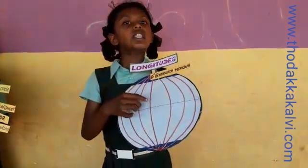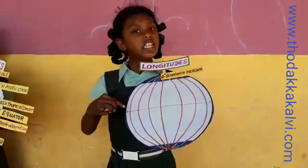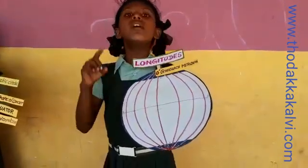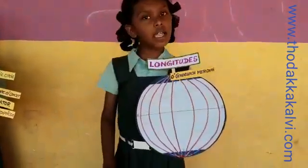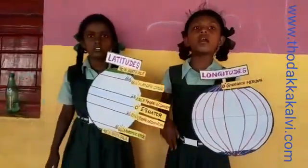As the earth rotates from east to west, the countries east of the prime meridian will face the sun first. Gradually, as the earth moves, the countries in the western hemisphere will face the sun.